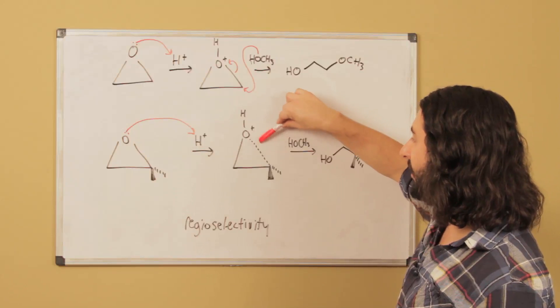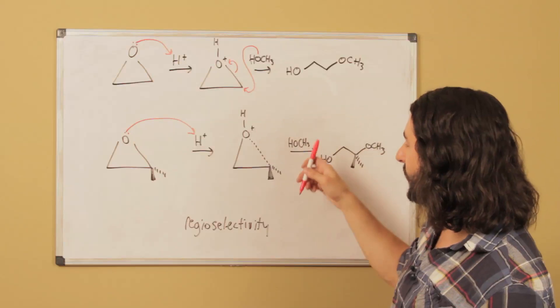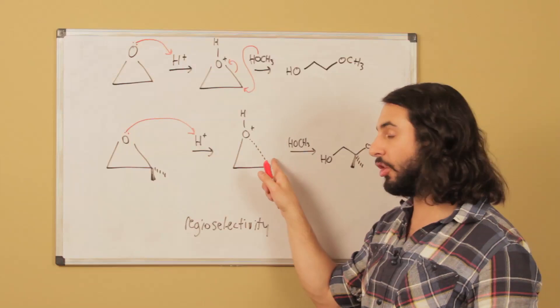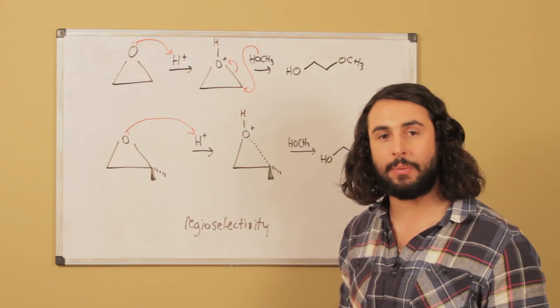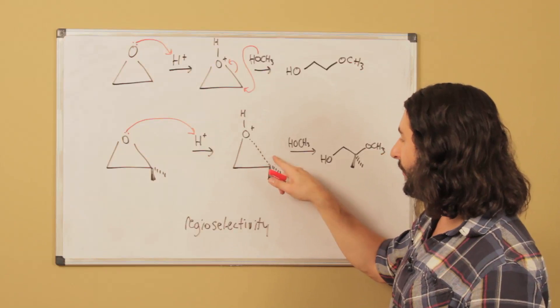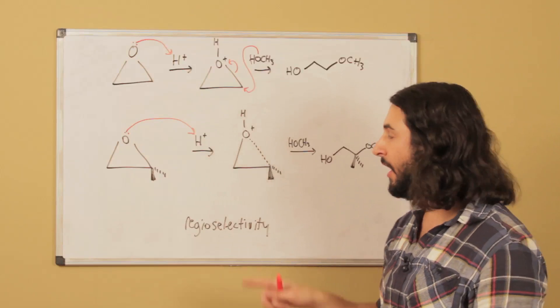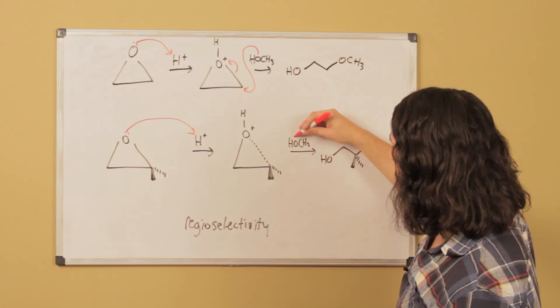Because this position is more substituted than this position, this bond is going to end up being much more likely to begin to weaken than this one. As this bond weakens we begin to generate some partial positive character right there. Because this is a quaternary carbon it's going to be very capable of sustaining that partial positivity because it is more substituted.